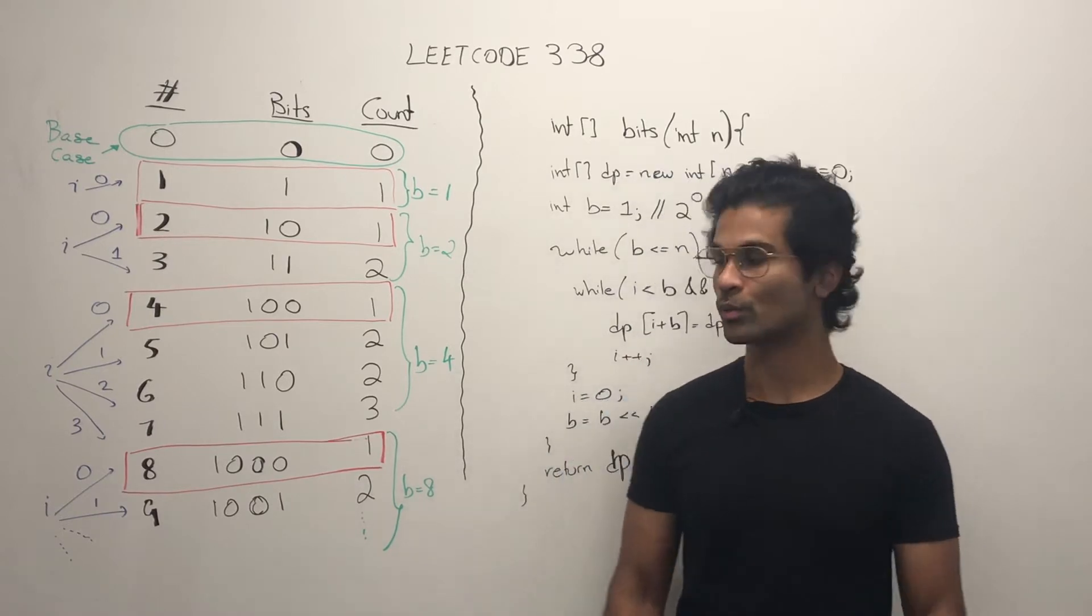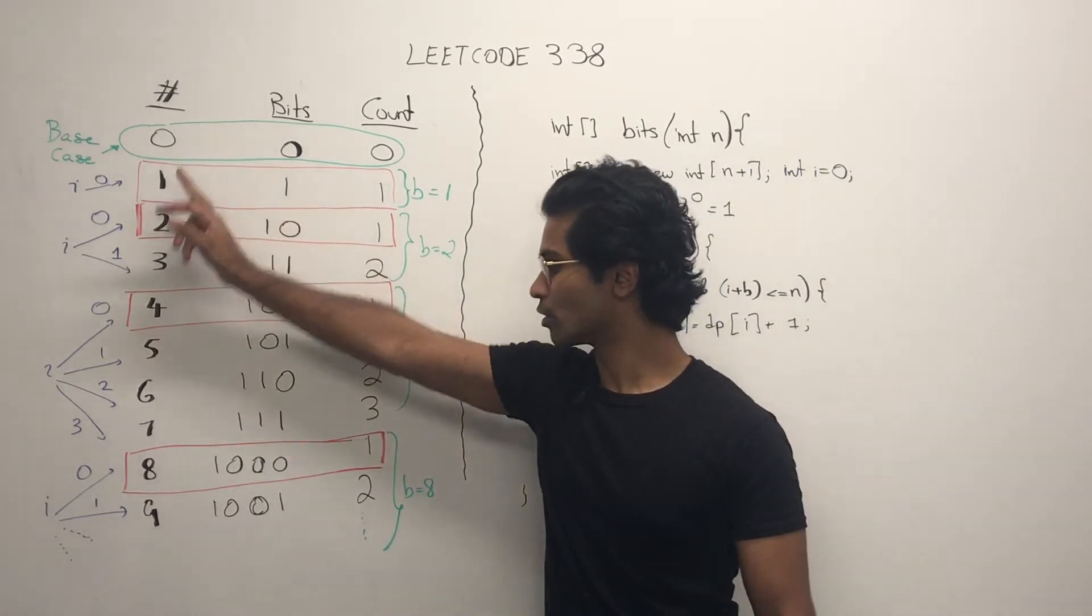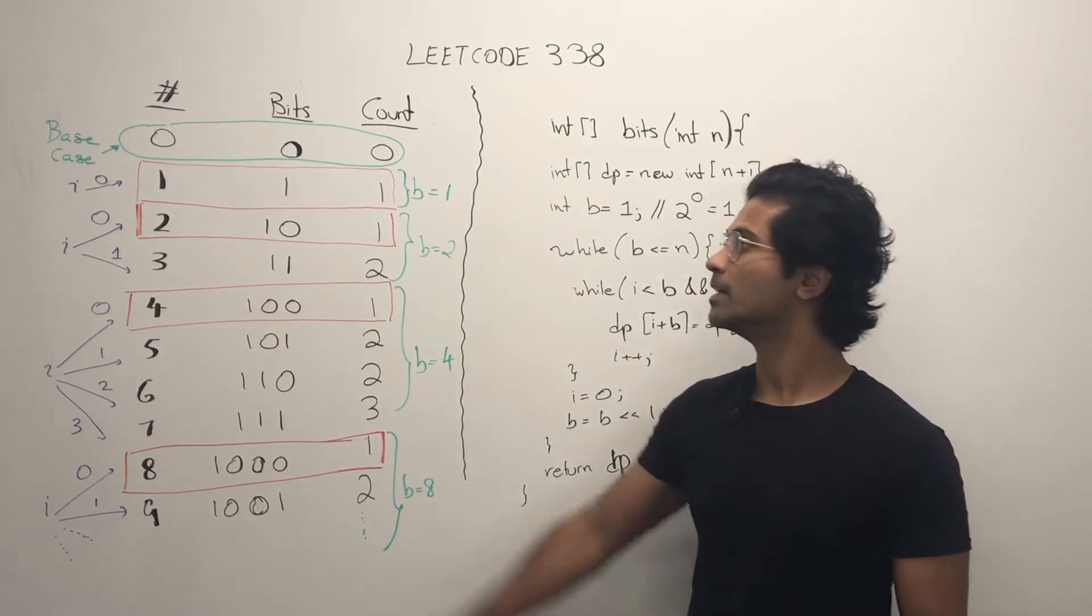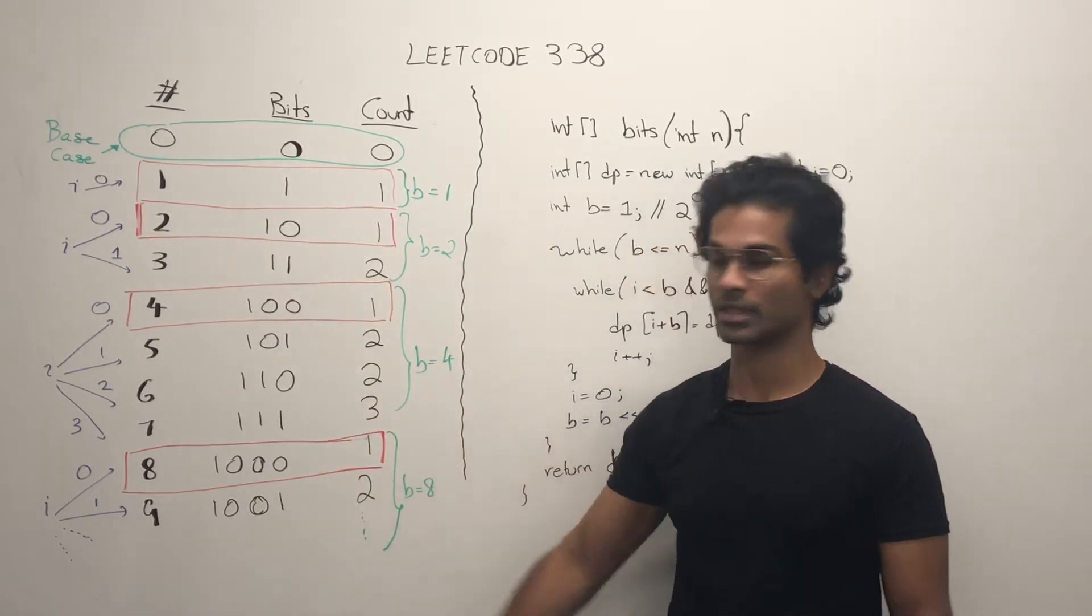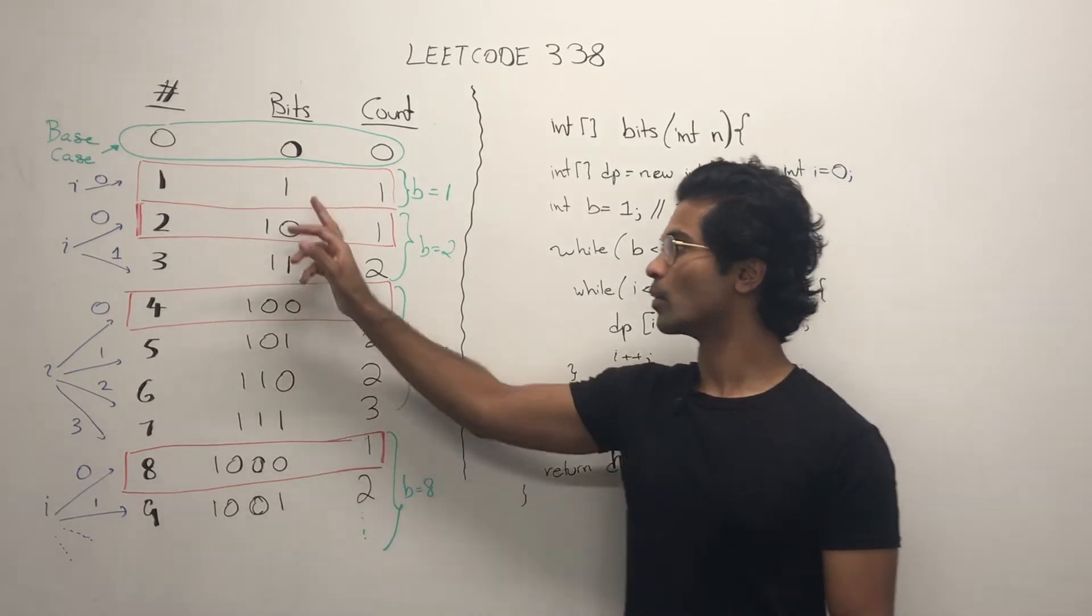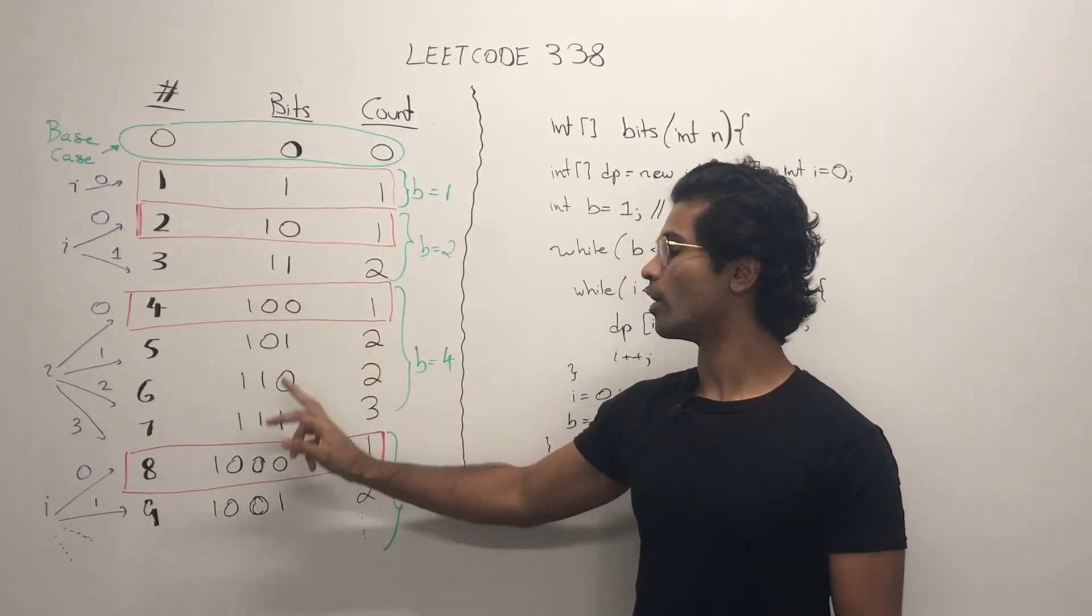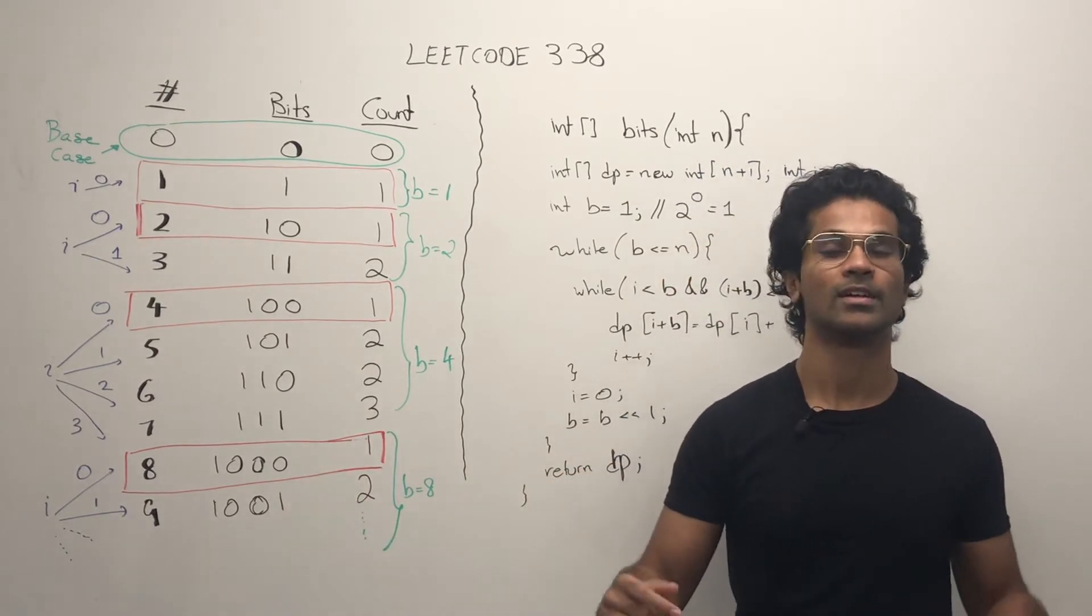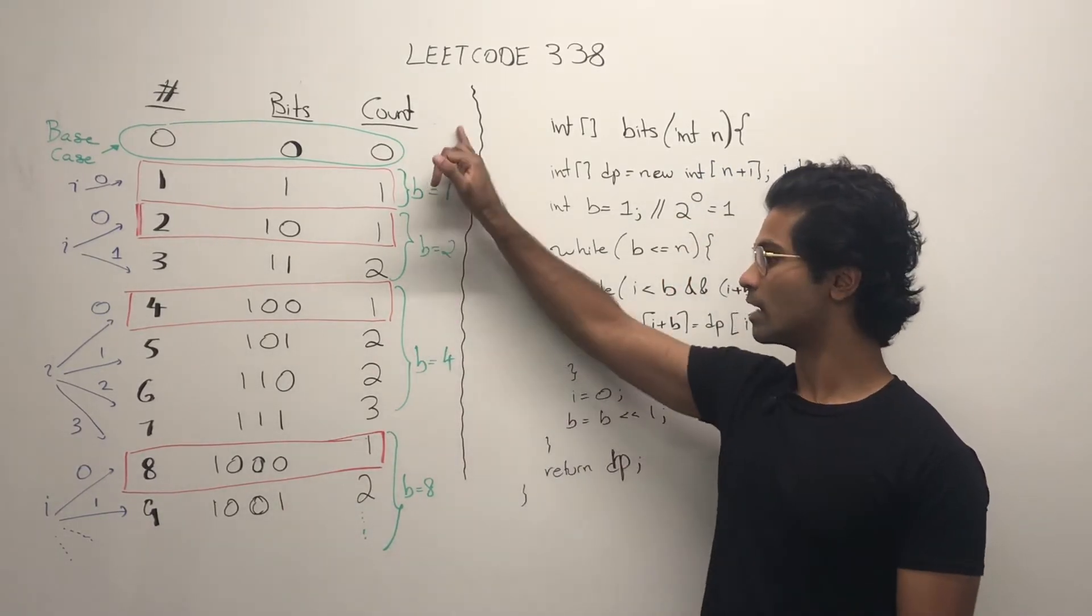So first we have our numbers, 0 to 9. Let's say our n is 9 and we have to get all the bits for that. These are the corresponding binary representations. So 1, 1 0, 1 1, 1 0 1, 1 0 0 0. So each of them I've written out the count.